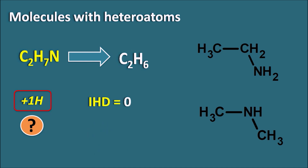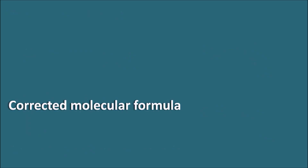It is not an easy task to write all possible structures for a given molecular formula and to check whether it is having a cyclic ring or pi bonds. So we should have some easy method in order to calculate the IHD value whenever the molecular formula is given along with heteroatoms. This can be achieved by taking a corrected molecular formula for the corresponding saturated compound having heteroatoms.